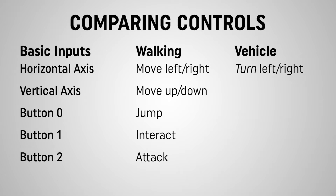We're going to instead use buttons to accelerate and brake. Remember that with our basic character controller we've set up a hierarchy of buttons where button 0 is our most important button and the buttons decrease in importance. In our walking controller, jumping is the most important feature and interacting and attacking follow as secondary and tertiary buttons. As we set up buttons for our vehicle we want to keep this hierarchy in mind — and I think the most important action is accelerating. So we're going to make that our button 0 action.